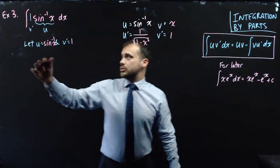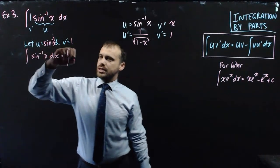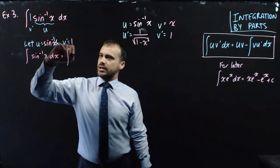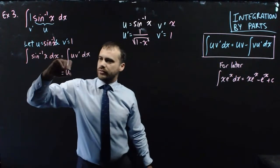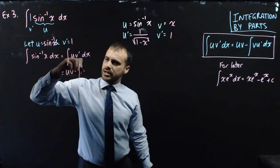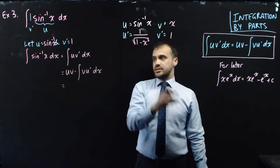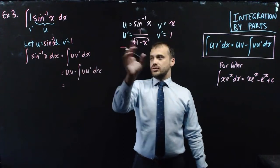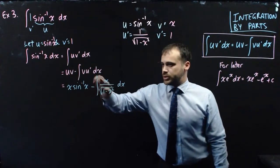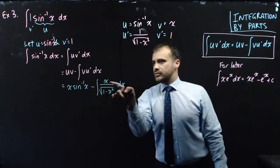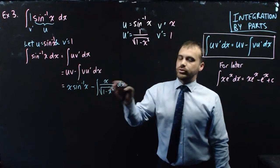Now we get stuck into it. The integral of arcsin x can be expressed as the integral of uv'. Using our integration by parts formula: uv minus the integral of vu' with respect to x. Substituting our values, that gives us x arcsin x minus the integral of v times u', which is x times 1 over √(1 − x²), so x over √(1 − x²) with respect to x.